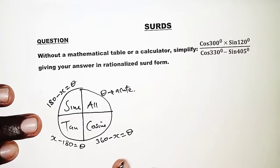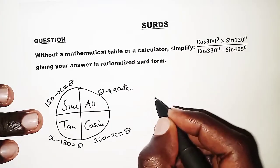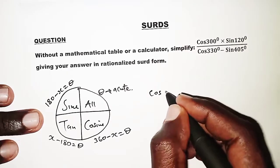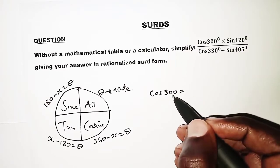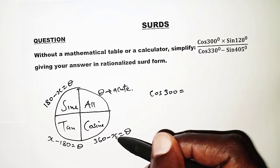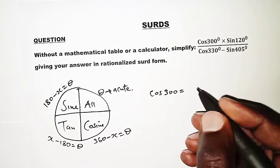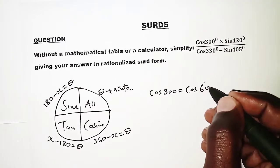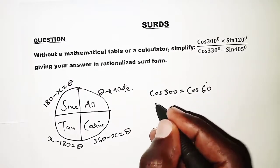With the help of the unit circle we are going to rewrite cosine of 300. Since 300 falls in the fourth quadrant, we use 360 minus 300, which gives us cosine of 60.